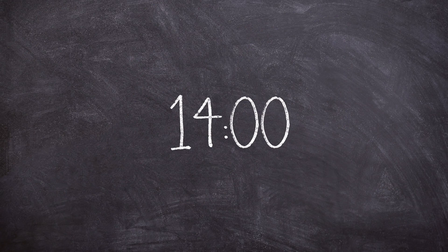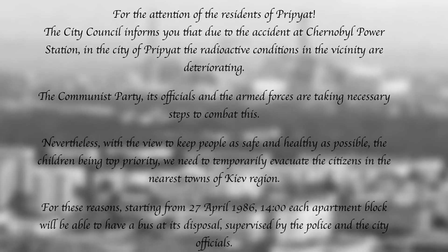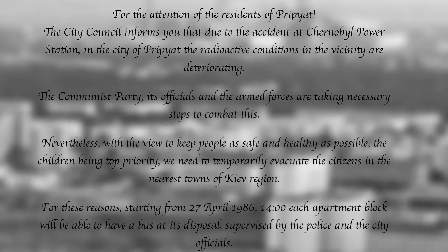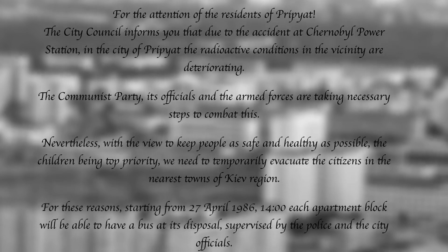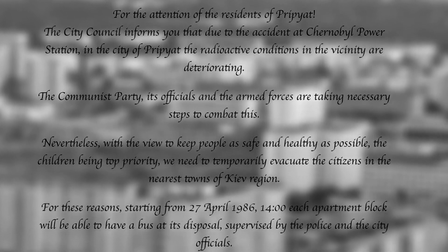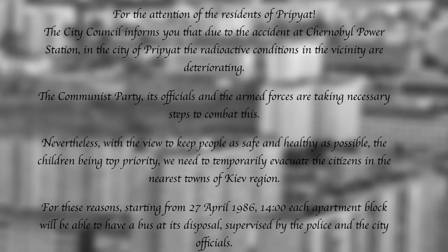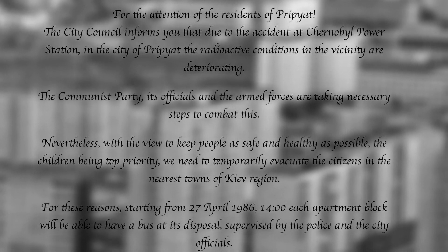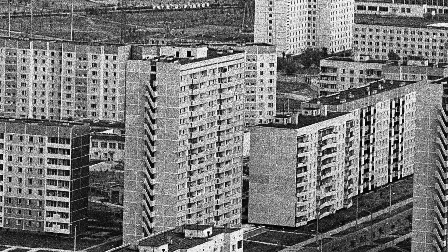The RBMK core was generally thought by staff to be incapable of becoming uncovered, and as such the blatant evidence to the opposite was ignored. At 2pm on the 26th of April, an announcement that you would never want to hear was broadcast in the city of Pripyat: 'For the attention of the residents of Pripyat, the city council informs you that due to the accident at the Chernobyl power station in the city of Pripyat, the radioactive conditions in the vicinity are deteriorating. The Communist Party, its officials, and the armed forces are taking necessary steps to combat this. Nevertheless, with the view to keep people safe and as healthy as possible, the children being top priority, we need to temporarily evacuate the citizens in the nearest towns of Kiev region. For those reasons, starting from the 27th of April 1986 at 2pm, each apartment block will be able to have a bus at its disposal supervised by police and city officials.' The first to leave the town were women and children, and within 3 hours the city was empty, a ghost town left to decay.